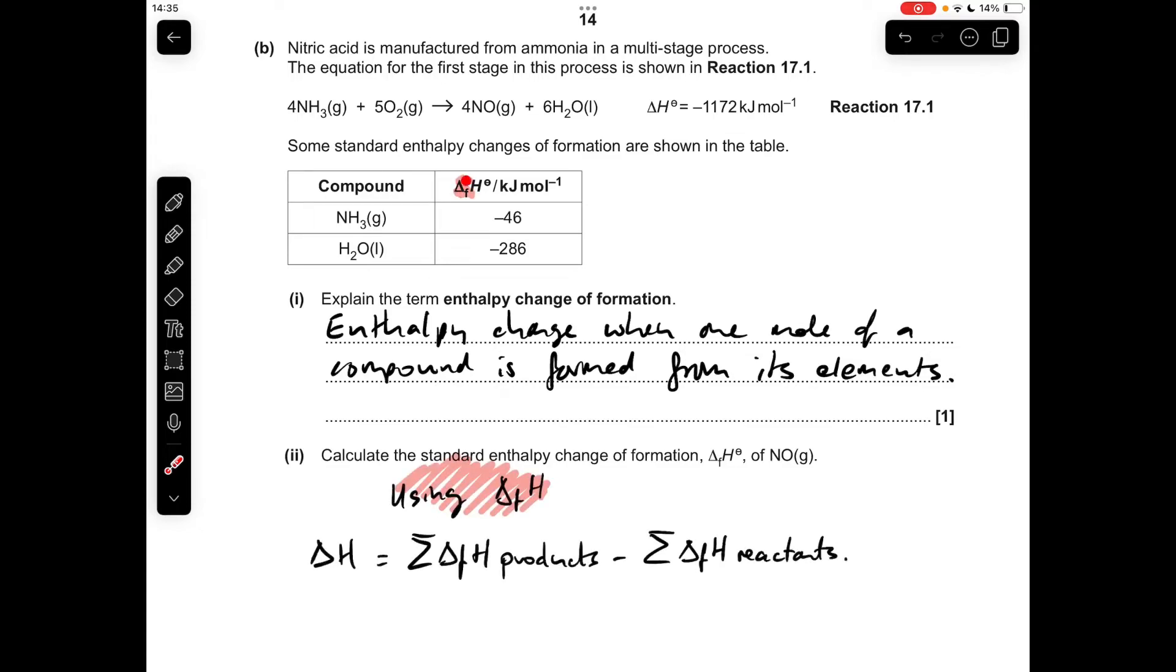Moving on to the calculation, you can see in the table we've got enthalpy change of formation values. When you use an enthalpy change of formation, the enthalpy change for the reaction is calculated using this formula here, so it's the enthalpy change of formation of the product minus the reactants.